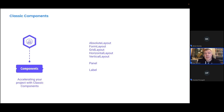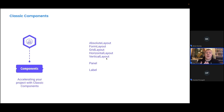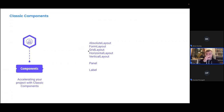These seven components are ones we've seen most used in the community in migration assessments, including Form Layout, Horizontal Layout, Vertical Layout, Absolute Layout, and Grid Layout. Horizontal Layout, Vertical Layout, and Form Layout are ones we very often come across in migration assessments, while Absolute Layout and Grid Layout simply aren't present yet in Vaadin Flow.